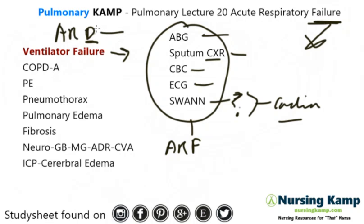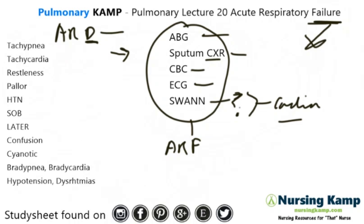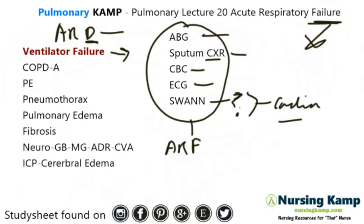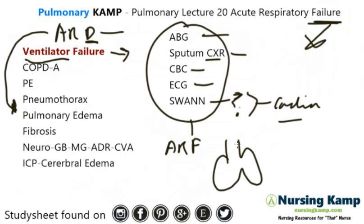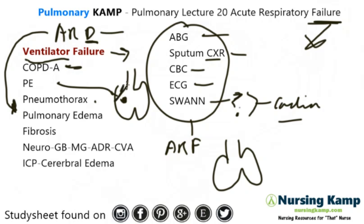Whenever a patient is in distress they have these signs and symptoms, and when a patient is in failure it's usually caused by the same things. There's ventilation failure — a problem with ventilation, not so much perfusion. Ventilation issues include asthma, upper airway problems, PE where there's a clot in the pulmonary tree, a pneumothorax causing a collapsed lung preventing expansion, and pulmonary edema where fluid causes less expansion of the lung vessels.